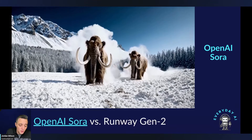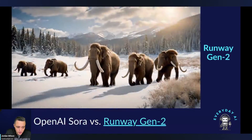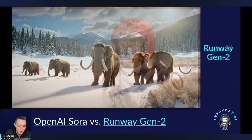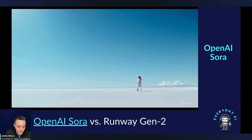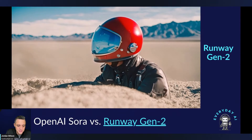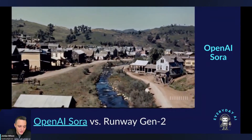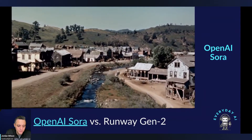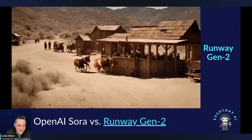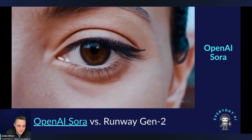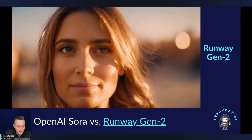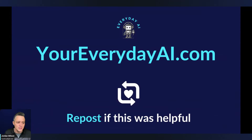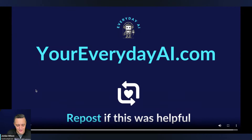Here we have Sora's version using the woolly mammoth prompt, and here we have Runway's — they're kind of walking backwards. Not the best. Here is OpenAI's astronaut clip, and here is Runway's — not that great. Here is OpenAI's Sora gold mining clip, and here is Runway's — that person turned into an ox. Here is OpenAI's Sora close-up of an eye, and then Runway's version — not really a close-up of an eye, but this is probably the one Runway did best on. I'll leave a link in the description so you can pause and look at more.